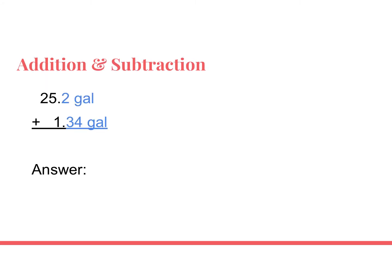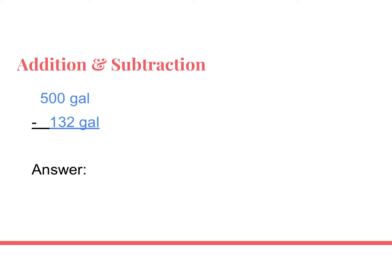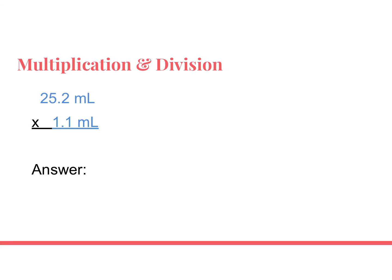Here's an example: we add two numbers together and get 26.54 gallons, but since this is addition it's about decimal places. The least accurate number is 25.2, which only goes to a tenth, so the answer is 26.5 gallons. For subtraction, you'd get 368 gallons, but since the lowest decimal place is in the hundreds, you round to 400 gallons. For multiplication, your calculator gives something like 27.72 mL, but the least accurate number has two sig figs, so the answer rounds to 28 mL.